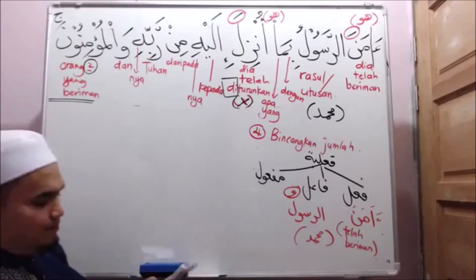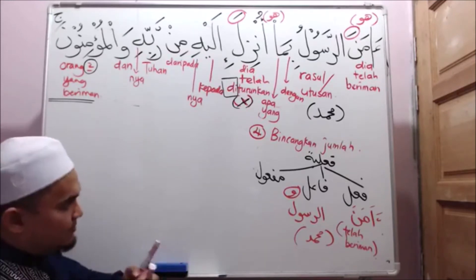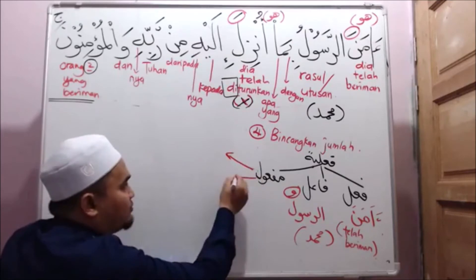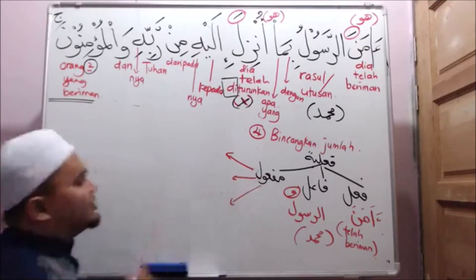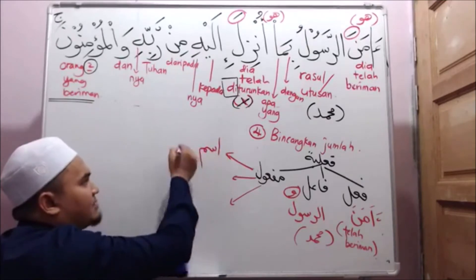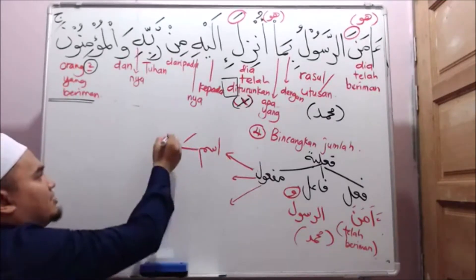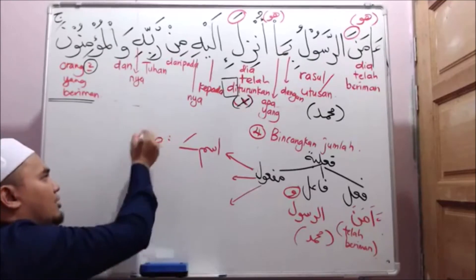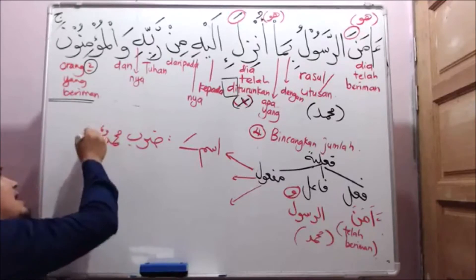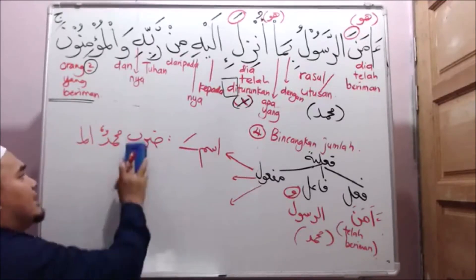Tuan-tuan wajib faham - dengar betul. Maf'ul dalam bahasa Arab sebenarnya ada tiga tuan-tuan, ada tiga keadaan. Tuan-tuan akan jumpa tiga keadaan. Saya akan tunjuk satu persatu. Yang pertama ialah isim yang berbaris atas seperti mana yang kita belajar. Contoh: Daraba Muhammadun Al-Aqala.